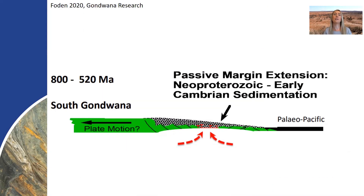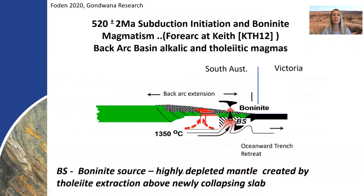The tectonic events that led to the Delamerian orogen are outlined nicely in John Foden's recent paper published in Gondwana Research earlier this year. Beginning around 800 MA with the breakup of Rodinia, we had the development of a passive margin and sedimentation from Neoproterozoic through to early Cambrian times. Around 520 MA, the existence of boninitic magmatism suggests that was the timing for the initiation of subduction.